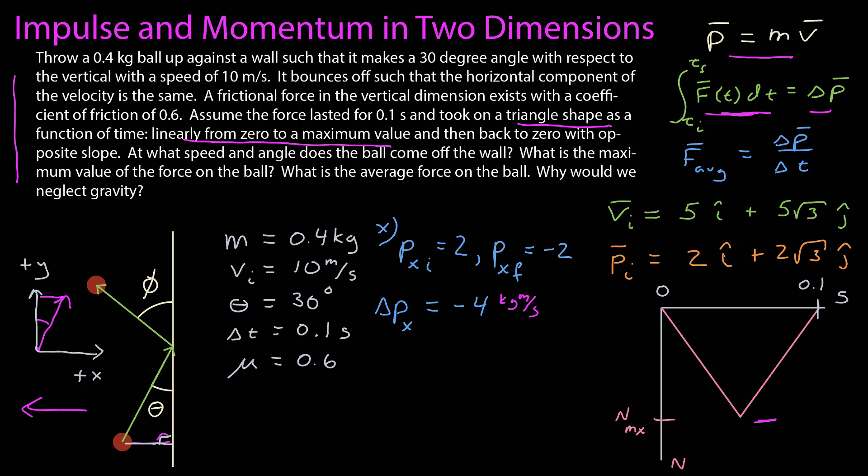And so it reaches some maximum value that I've identified here. And of course, I've made it below 0 because I know that the normal force, given my coordinate system, is pointing in the negative x direction. So the impulse is the integral of that force as a function of time, which is the area underneath that curve. And that's a triangle, so the area is one-half the base times the height, which is the maximum of the normal component. So that integral, then, is equal to the change in momentum, which is negative 4. So I can solve for that maximum component, which is a negative 80 newtons.